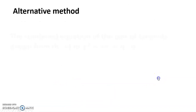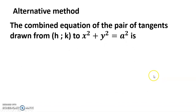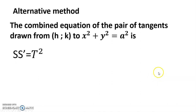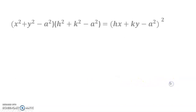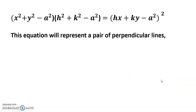Now the alternative method: using the combined equation of the pair of tangents drawn from (h, k). The formula is SS' = T², i.e., (x² + y² − a²)(h² + k² − a²) = (hx + ky − a²)². This equation represents a pair of perpendicular lines when the sum of coefficients of x² and y² equals zero.